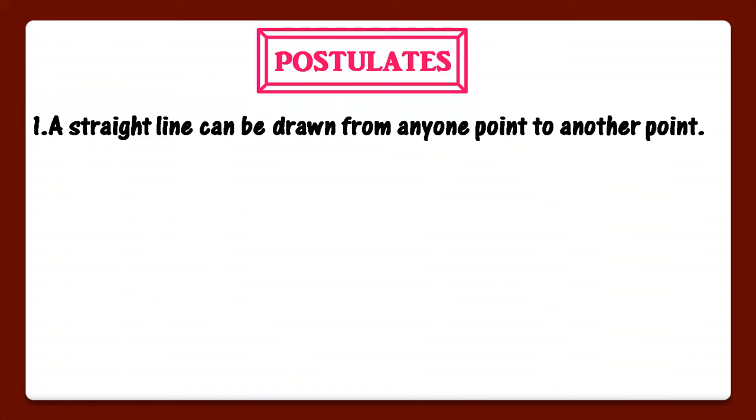The postulates given by Euclid are as follows. The very first is a straight line can be drawn from any one point to another point. A straight line can be drawn from one point to another point. We have these two points A and B. We can draw a straight line. So, this is the first postulate.